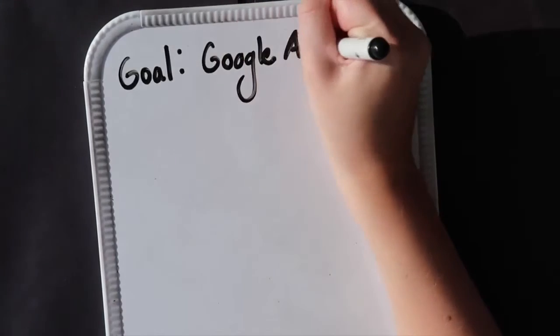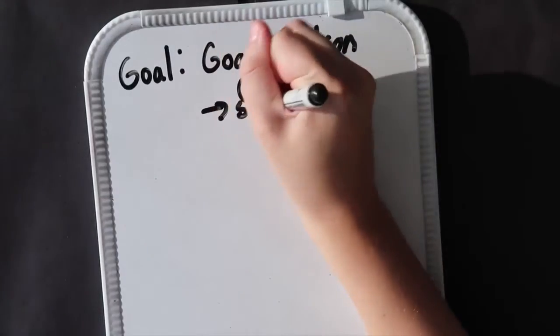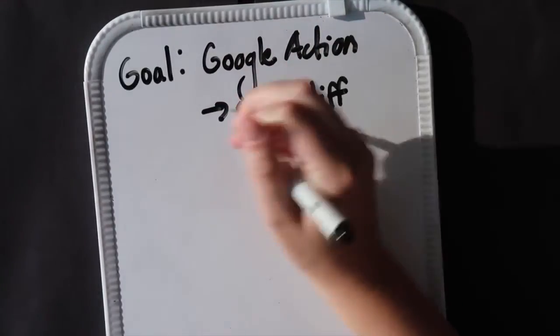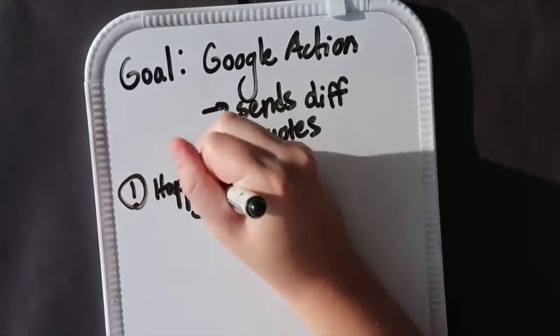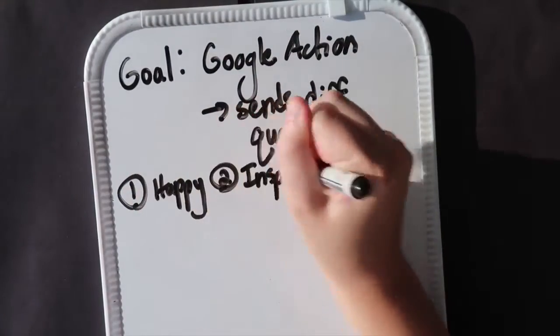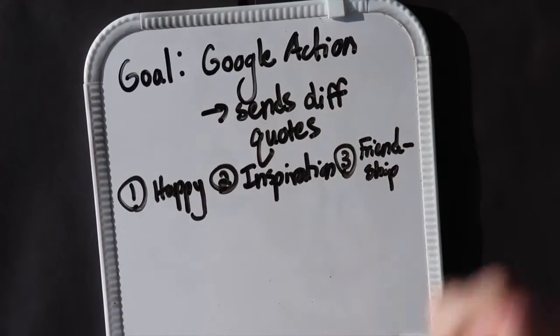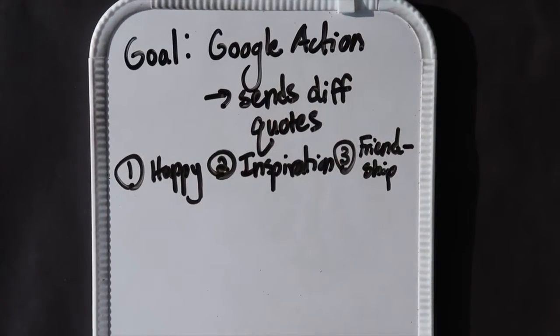In this video, we'll be creating a Google action that gives us different types of quotes — happy quotes, inspirational quotes, quotes about friendship, etc. In this case we're just going to stick with these three types.